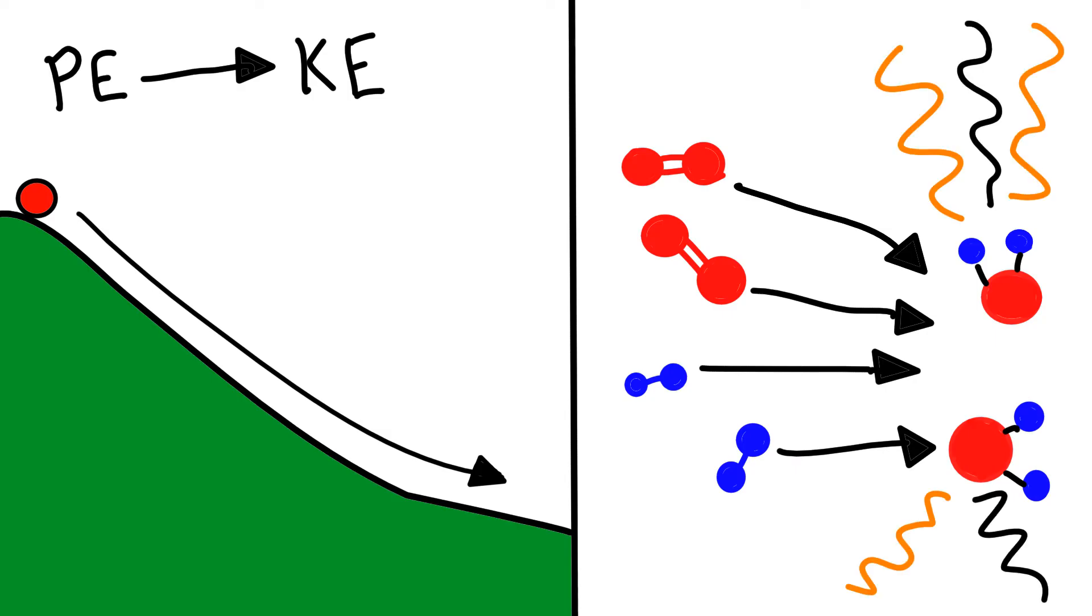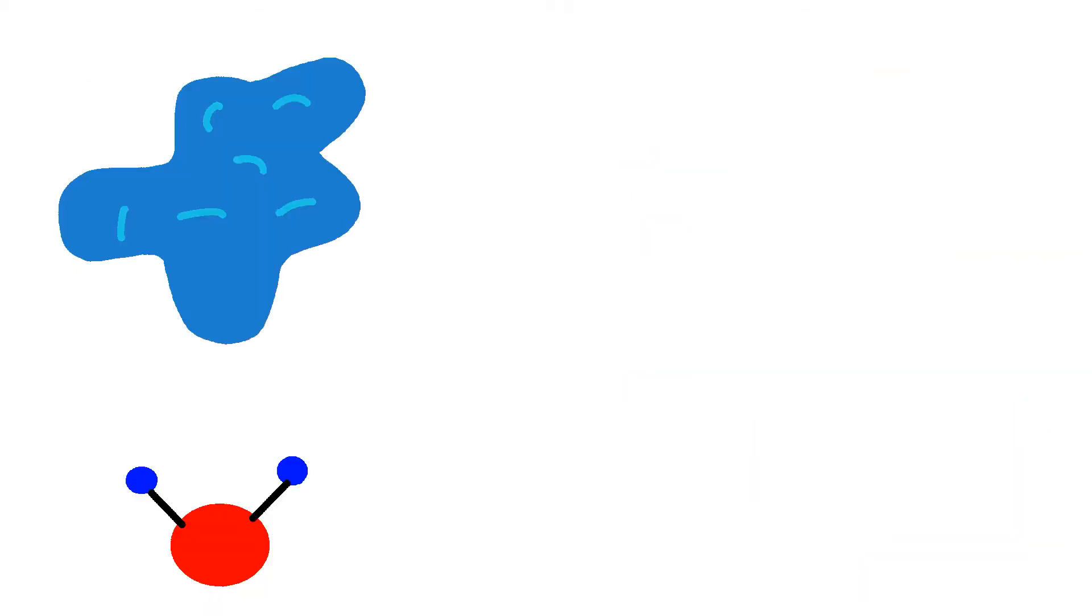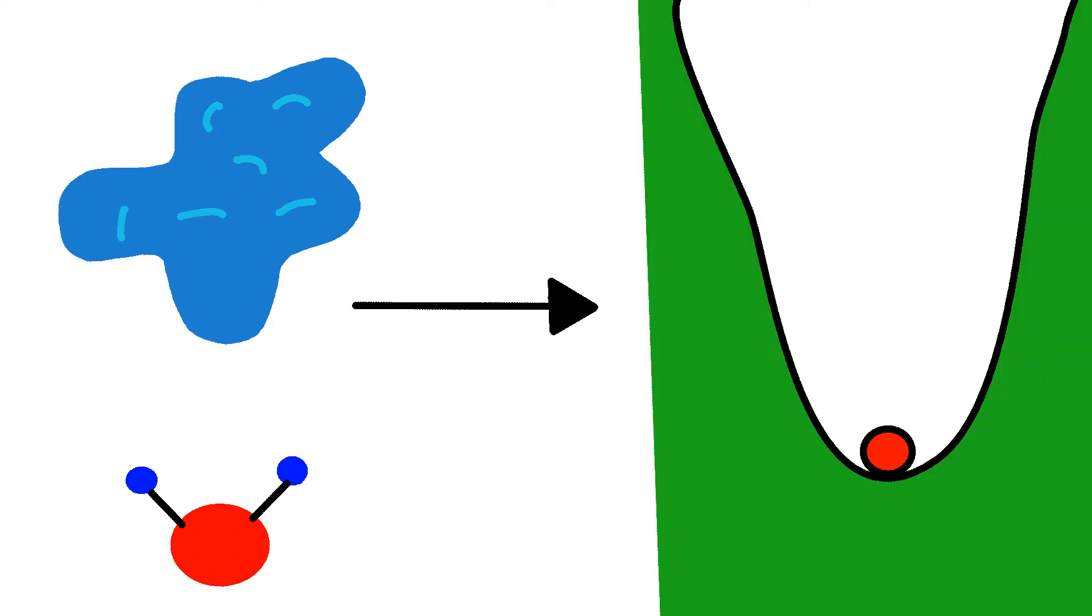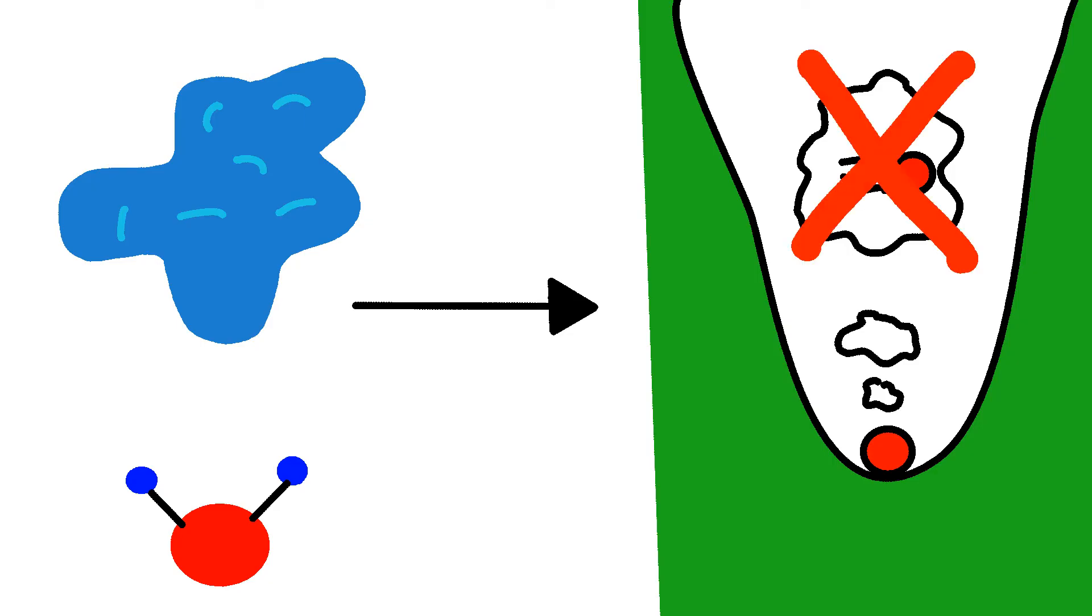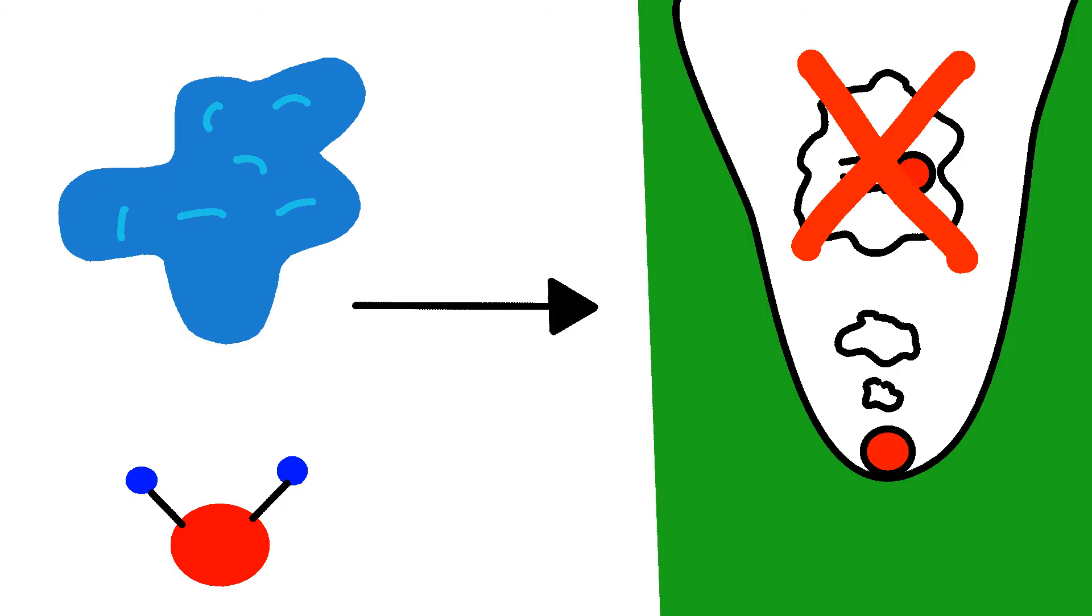So why do different chemicals behave so differently? First let's consider the case of water. If we draw a direct comparison to our ball on a hill, water would be like if the ball was in a very deep valley. Since the ball is already at its lowest point, it can't go anywhere to pick up kinetic energy, and therefore already has the lowest amount of potential energy possible. Similarly, this is why water doesn't burn or explode. The atoms that make up the water molecules are already in a very low energy configuration, and so they do not have potential energy to get rid of.